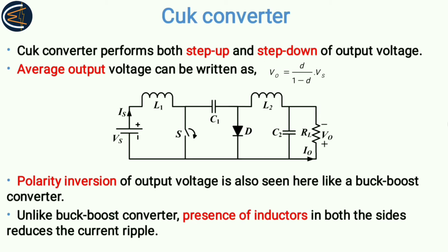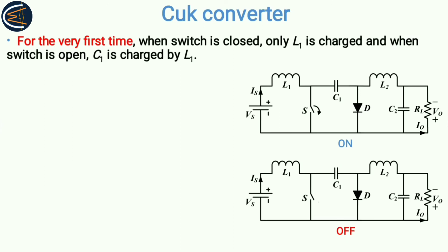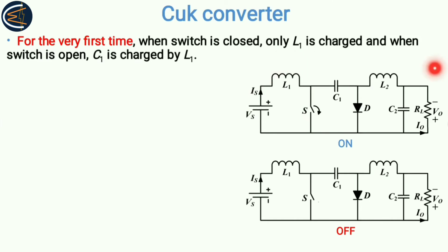Now let's look at the working principle of the Ćuk converter. This circuit diagram indicates the on-state and this one indicates the off-state. For the very first time when the switch is closed, only L1 is charged by the input supply. The rest of the circuit parts are not active because there is no power flow in the rest of the circuit.